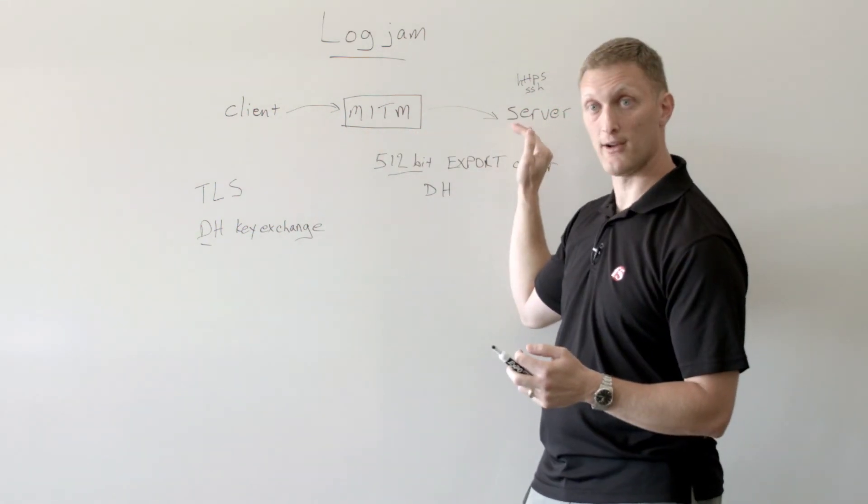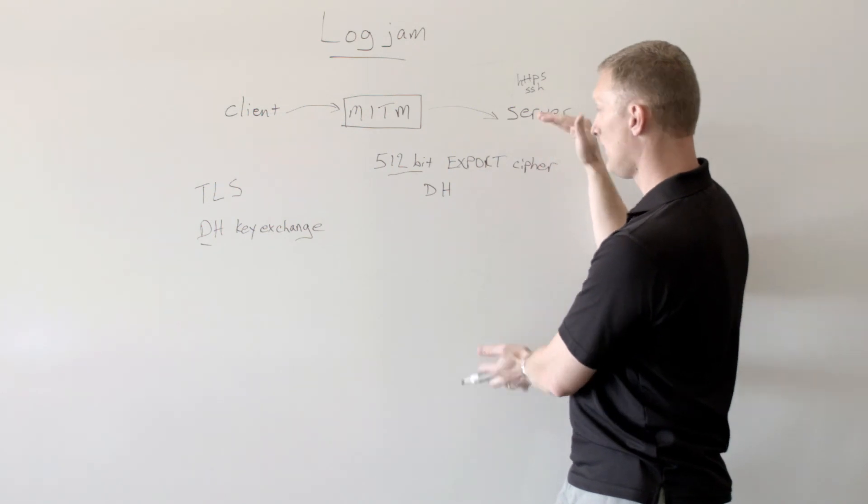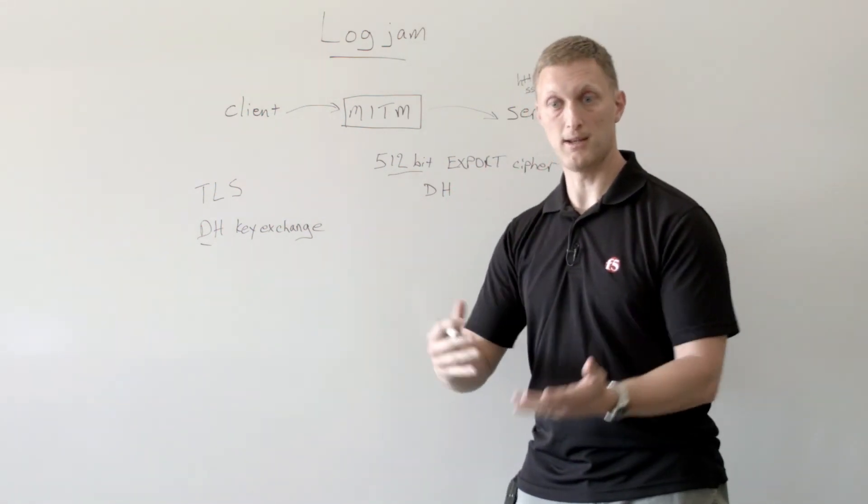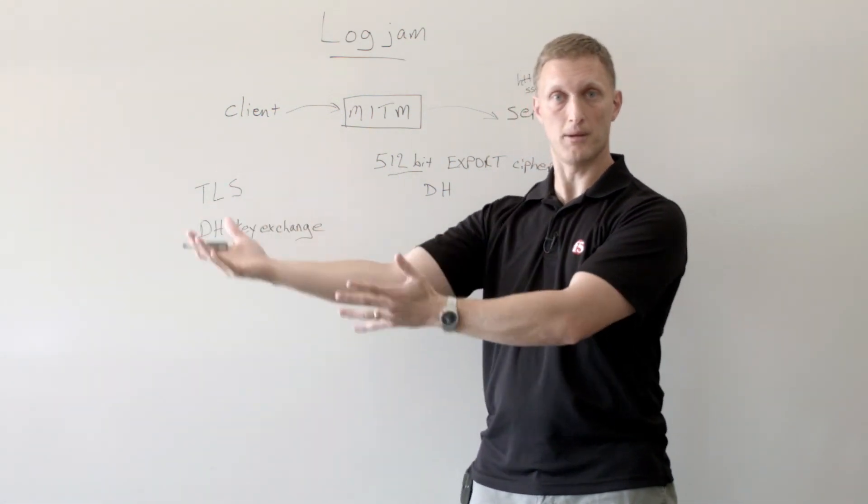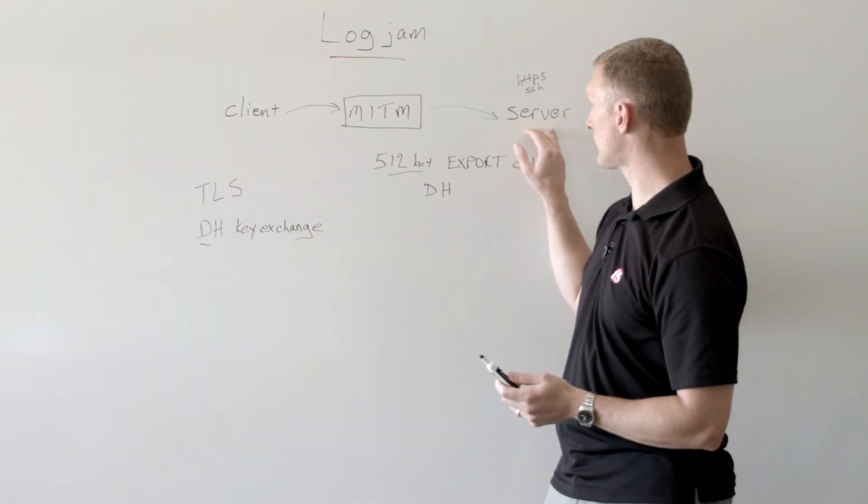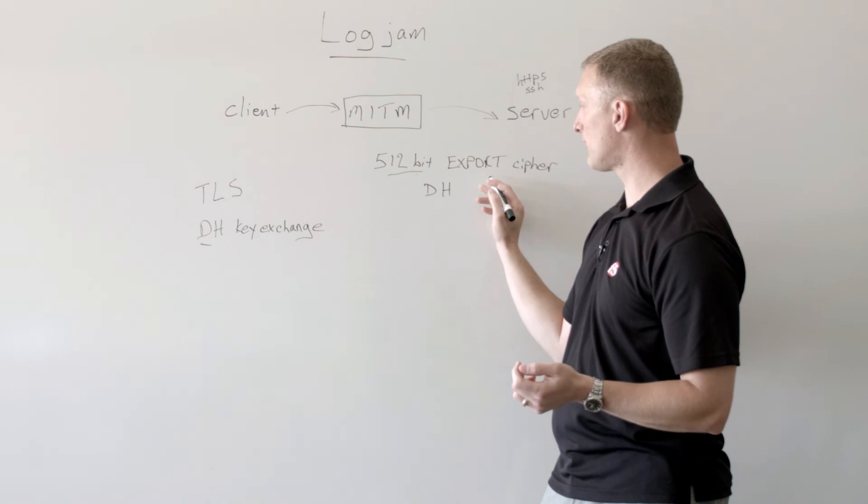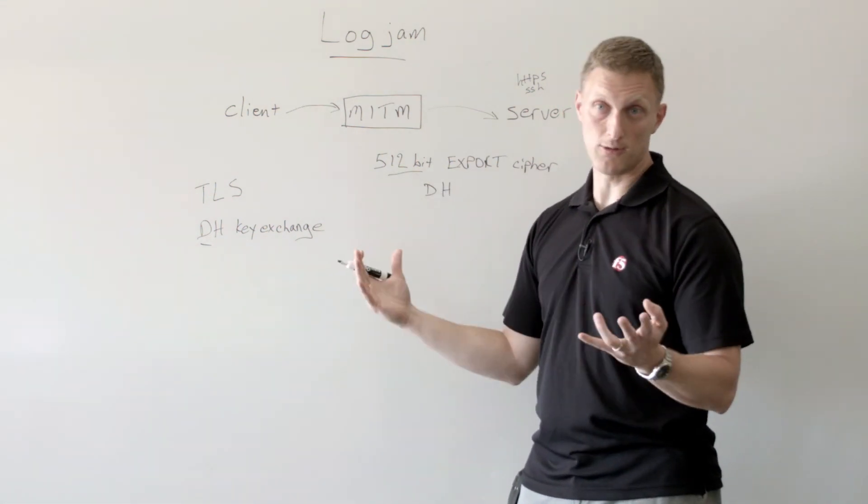And then obviously a lot of servers out there have this in their cipher list. It's like, hey, a server may say, hey, I can use the 512 export. I mean, that's one of my options. I want to be able to offer that. If that's all my client can do, then I want to be able to offer that up. And so some servers are vulnerable to this as well. So you could say, well, let's just quit offering this as one of the cipher suites, and then that would help. So you could do that.